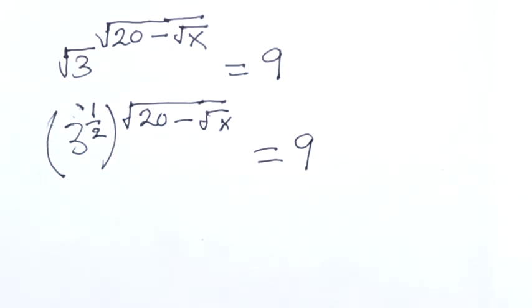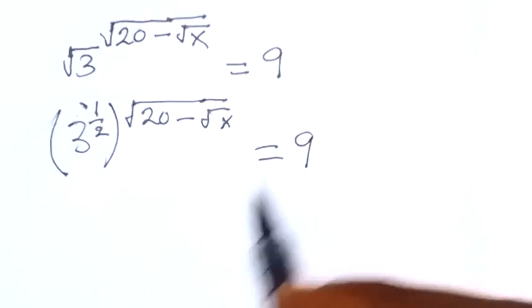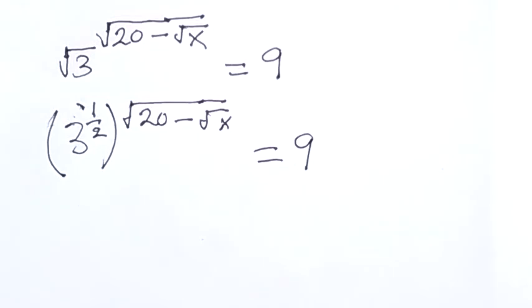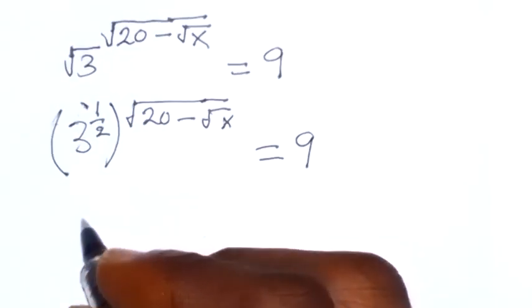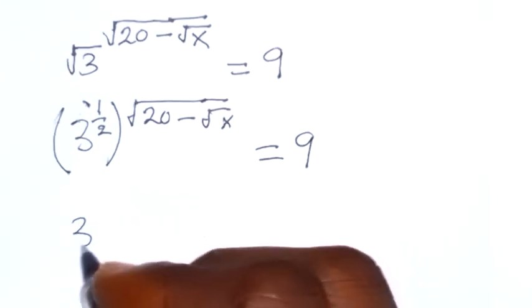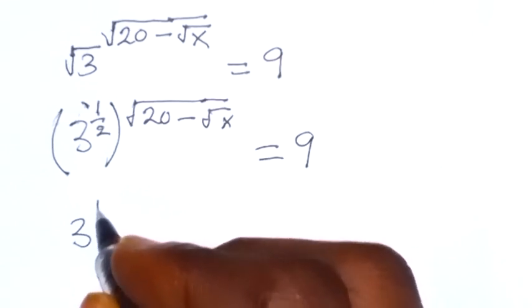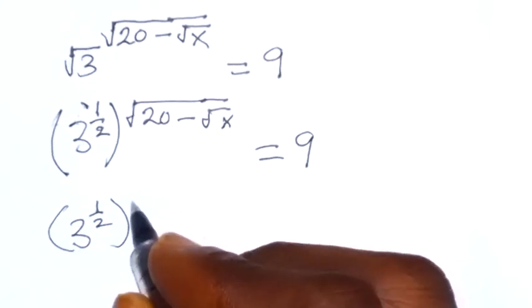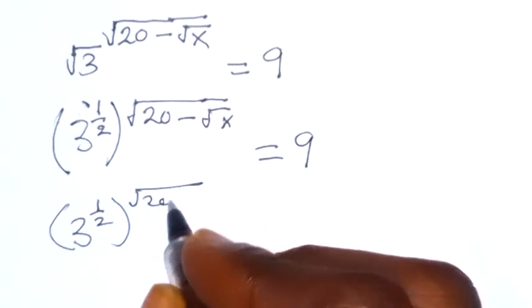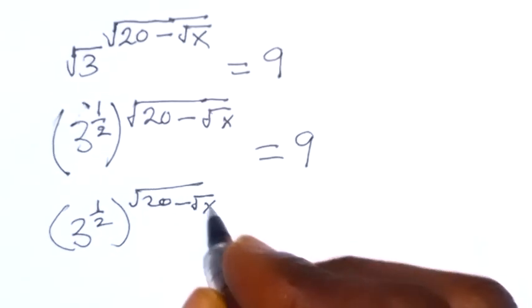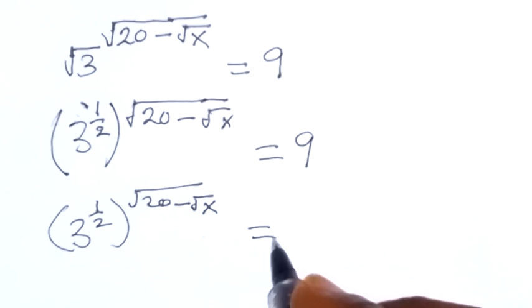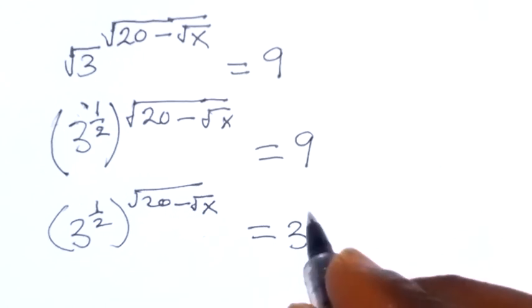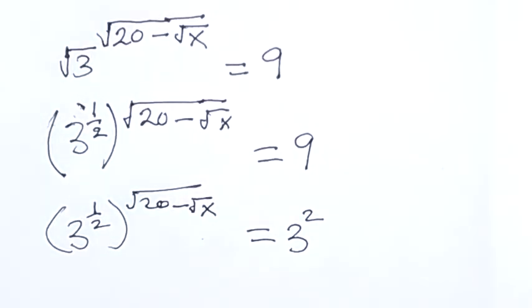From here we can also express 9 as 3 raised to power 2. That is, we have 3 raised to power half, then raised to power root 20 minus root x, which will then be equals to 3 raised to power 2, because 3 raised to power 2 gives us 9.